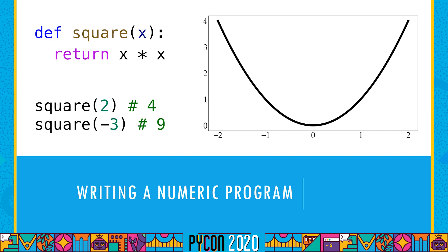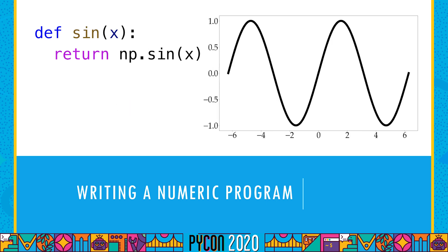This is a function f of x equals x squared, so I'm just squaring each input. Two turns into four, negative three turns into nine. To make the graph, there are too many real numbers to evaluate our function everywhere, but we can just evaluate it at 50 or 100 points and get an idea of what's going on. There are, of course, a lot of numeric programs. This one is sine of x — a function from trigonometry that tells you about circles and triangles. This is a very basic function to implement, as it's already built into NumPy.